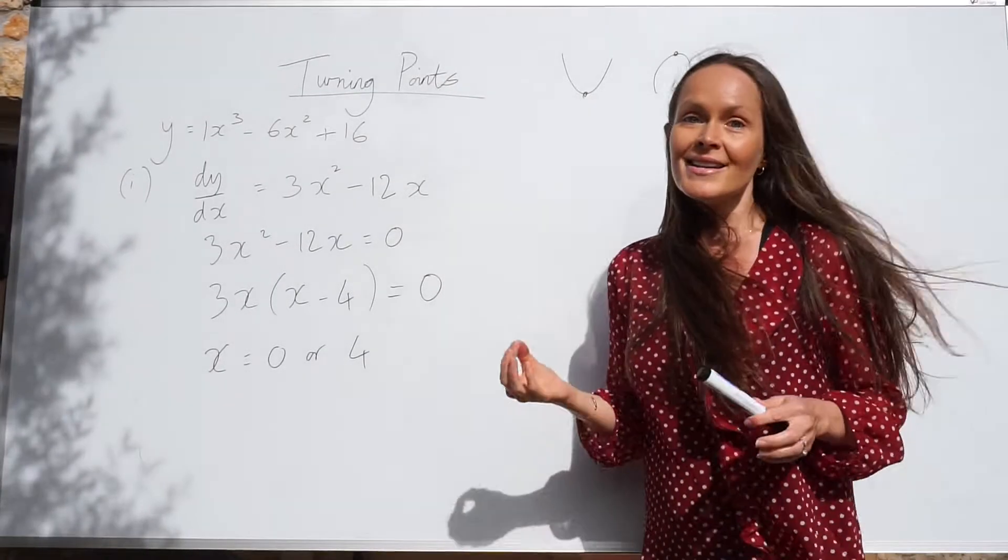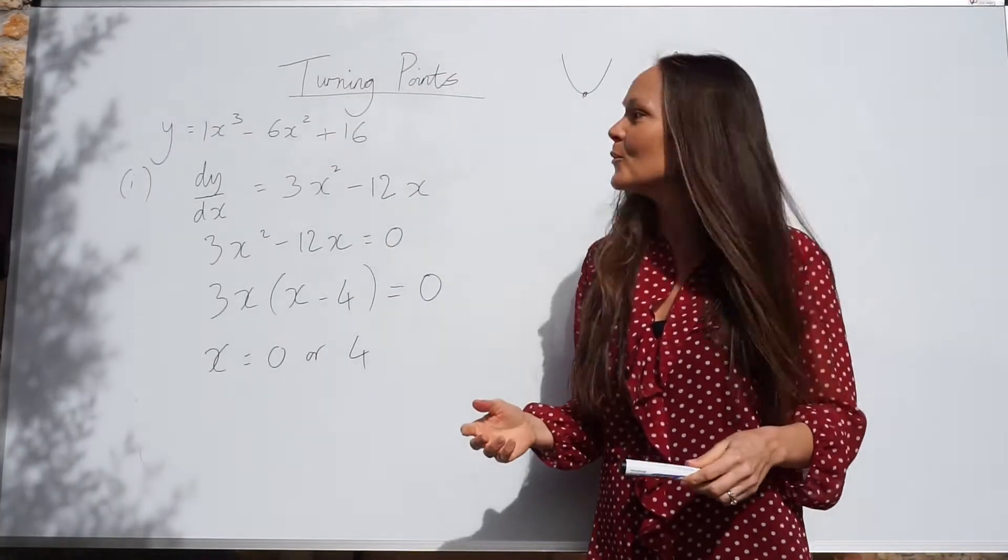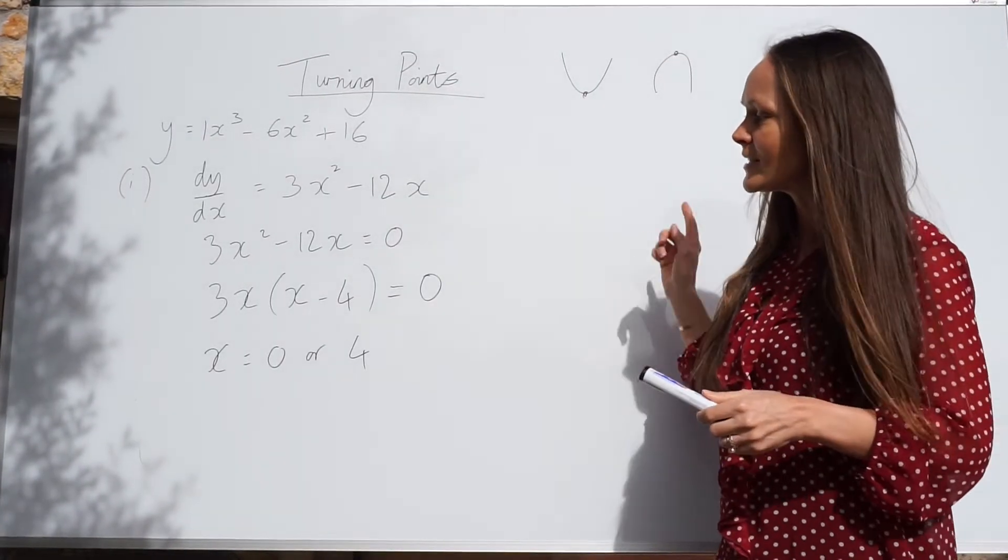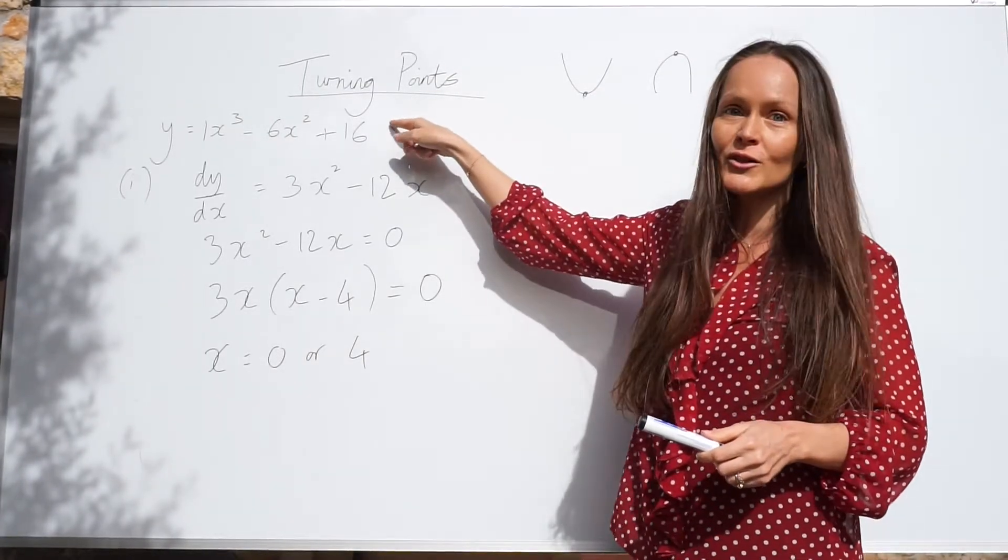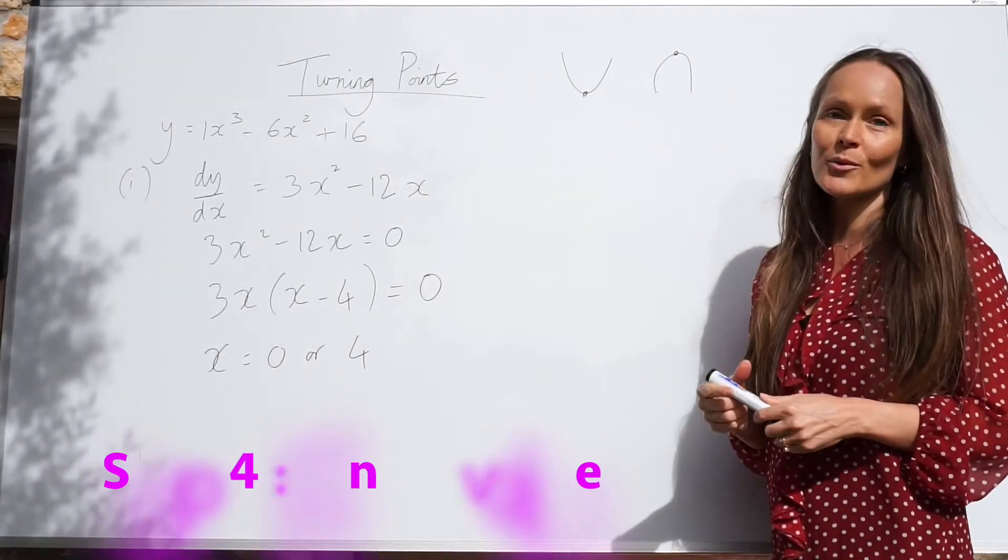So we've found the x-coordinates. Now we have to work out the y-coordinates. To work out the y-coordinates for the turning points, what you need to do is just substitute these values of x back into the original equation. So let's start with x is 0.